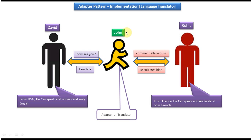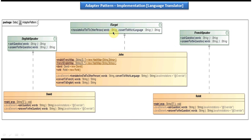In between we have the adapter or translator — John. I have created an ITarget interface, and this interface has a translate and tell to other person method. This method will be implemented by John. John has two methods: one is convert to French, which will convert English to French, and another is convert to English, which will convert French to English. The translate and tell to other person method will use these two methods.